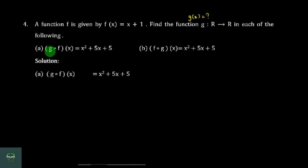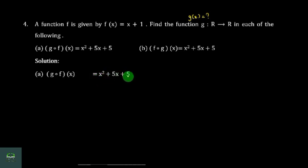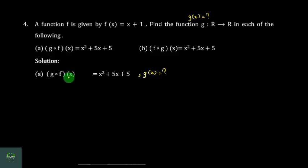The solution is number one. The first thing is that the function of x is equal to x squared plus 5x plus 5. Now, I have to tell you how much of x is equal to x squared plus 5x plus 5.